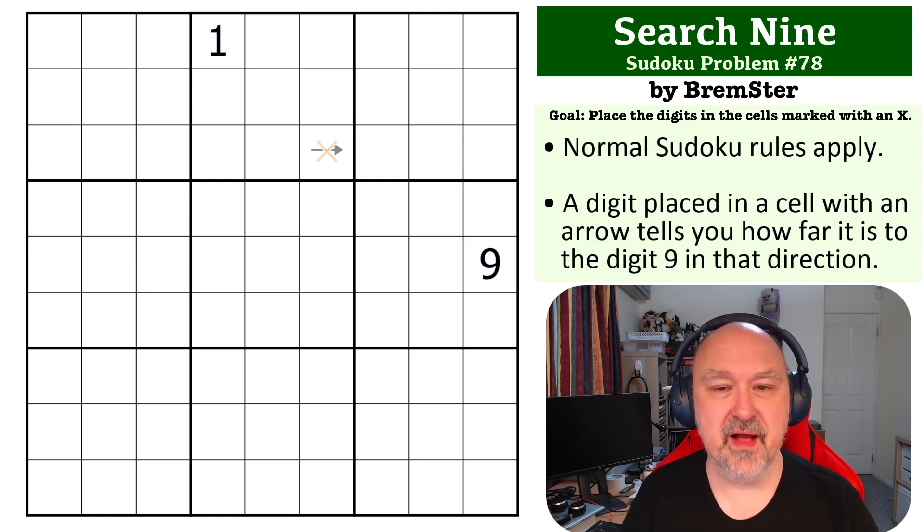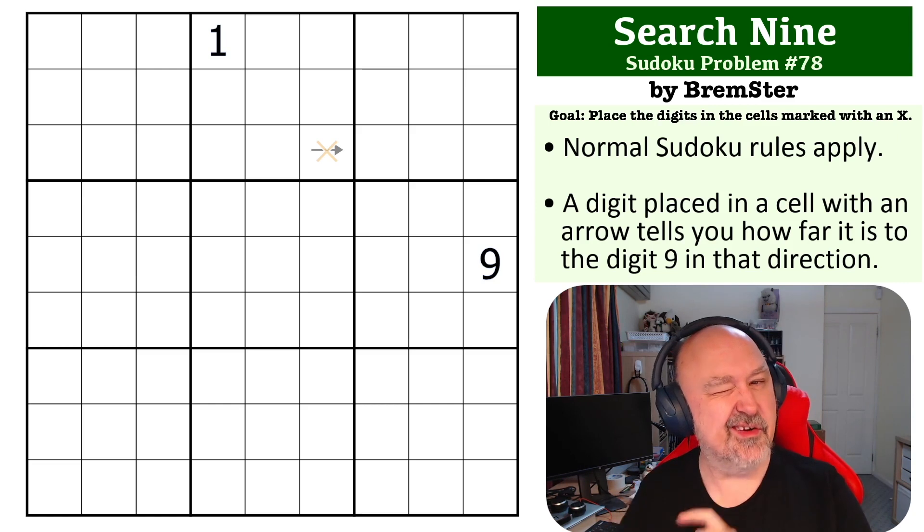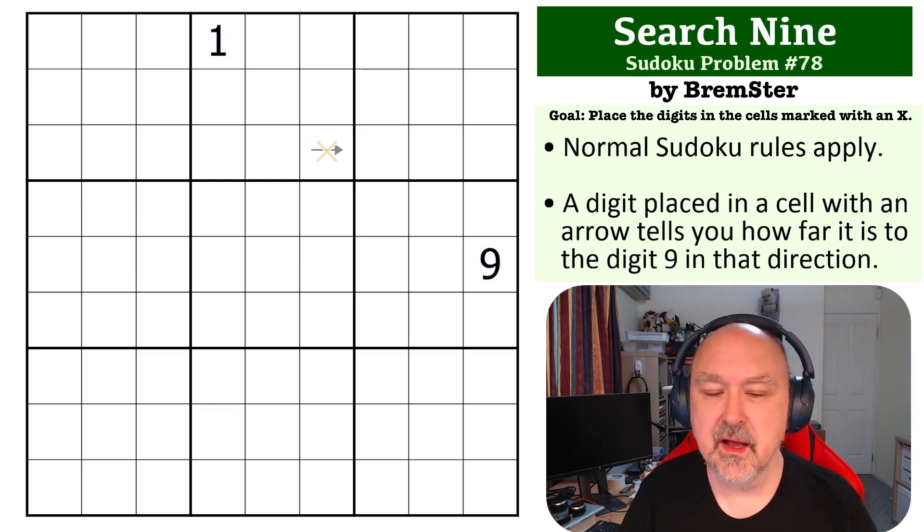I'm sorry about the overlapping x and arrow making it a little bit hard to see, but the goal is just to place the digit in the cell marked with an x. There is a link below to where you can attempt this problem for yourself. I'm going to wait for a couple of seconds so you can pause the video, give this a try, and then I'll be back to explain how this one works.